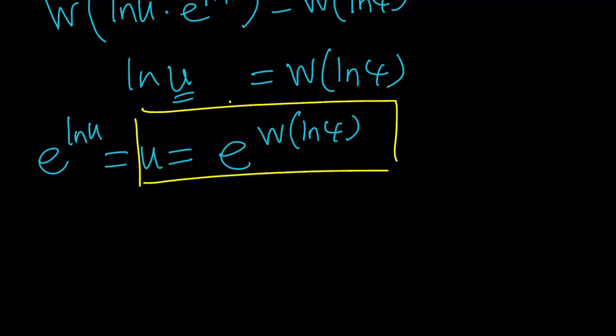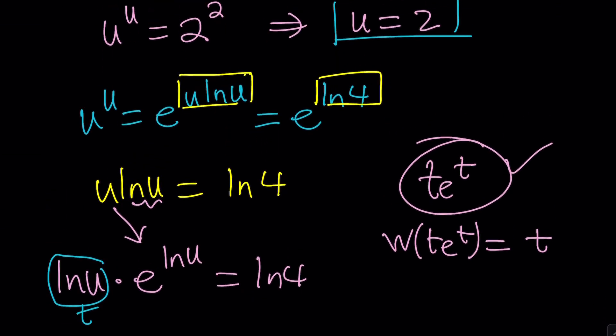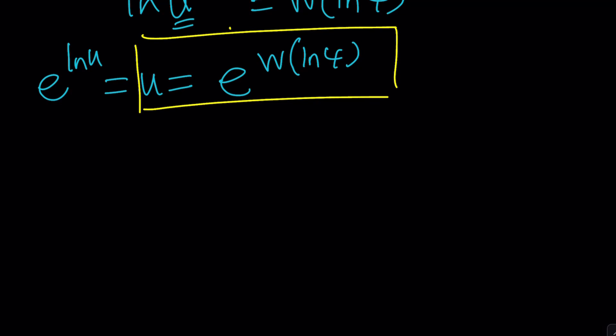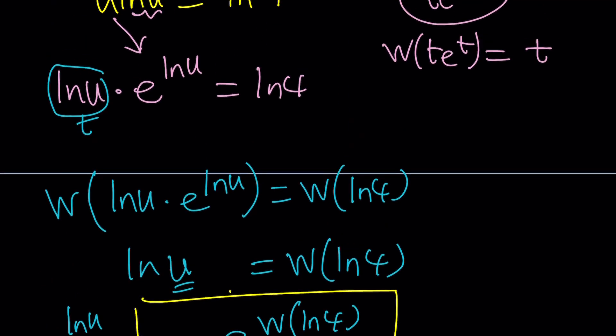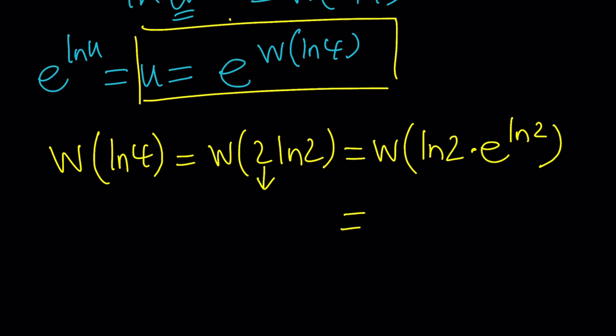And one of the values, remember, one of the solutions was u equals 2. So do we really get 2 from here? Let's find out. So if you take Lambert's w, apply it on ln 4, which you can write as 2 ln 2, and then obviously we can do the same trick, ln 2, and then write the 2 as e to the power ln 2. And when you apply Lambert's w, remember it's w on t e to the t, you're going to get t, which is ln 2 in this case.